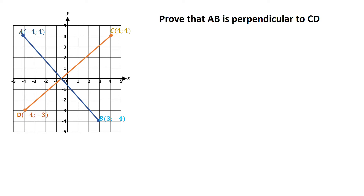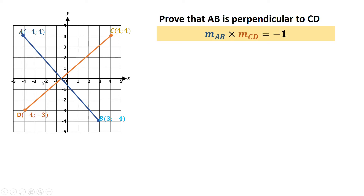So in this example here they want me to prove that the blue line is perpendicular to the orange line. I know that the two gradients of perpendicular lines when multiplied give me negative 1. So if I take the gradient of this line here and multiply it by the gradient of the orange line, I should get negative 1 if they're perpendicular. Obviously if they're not perpendicular you're not going to get negative 1.